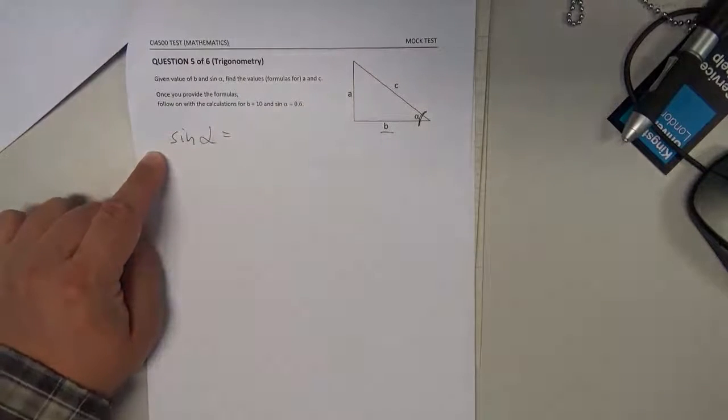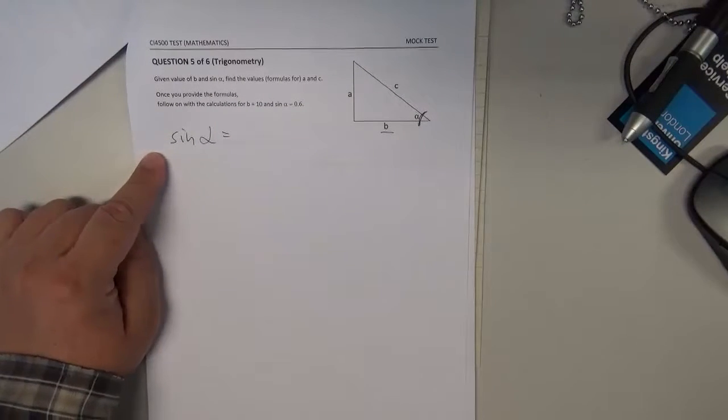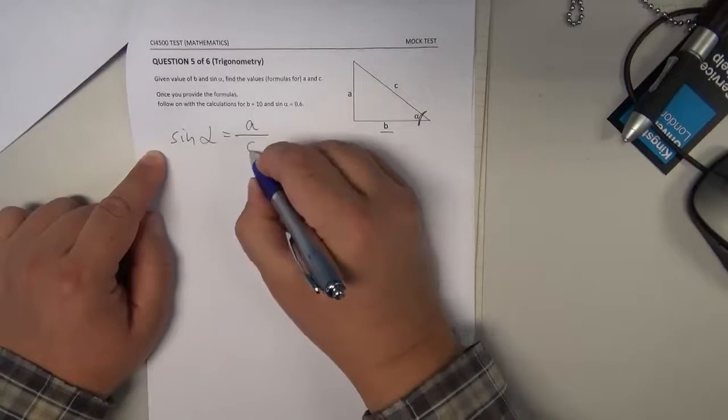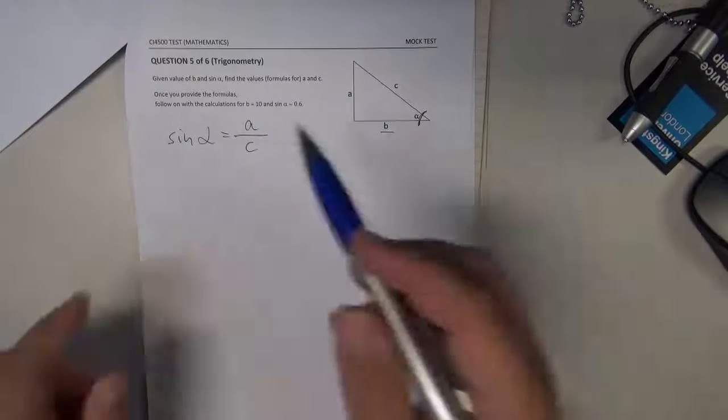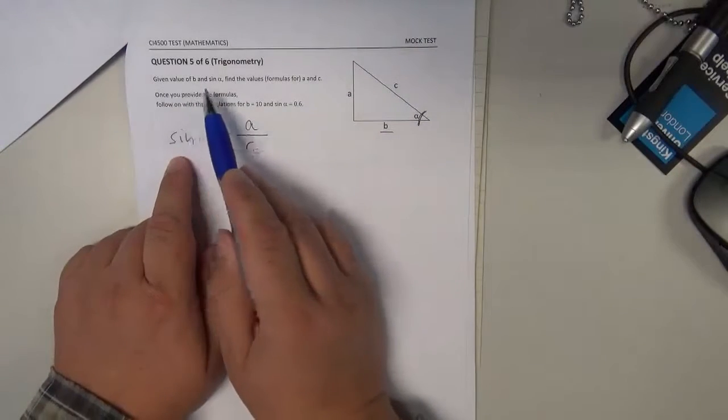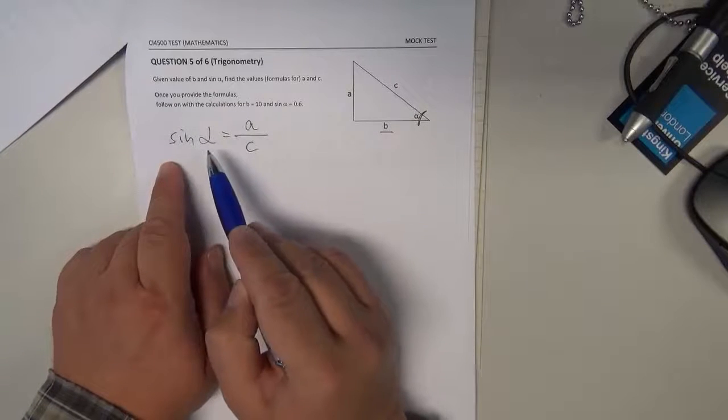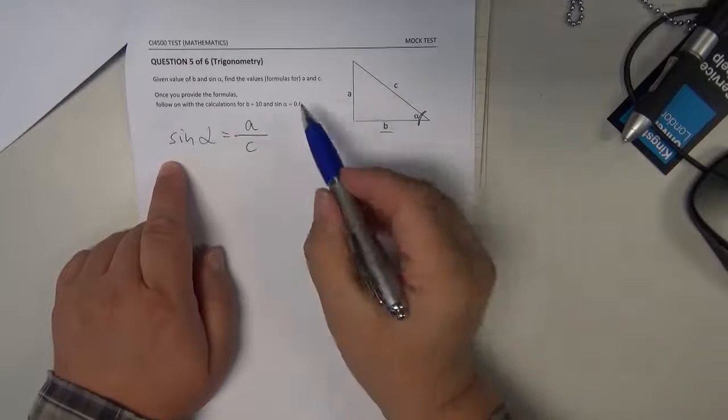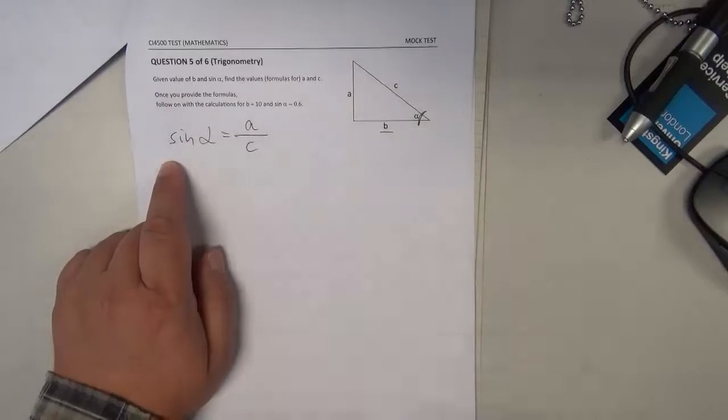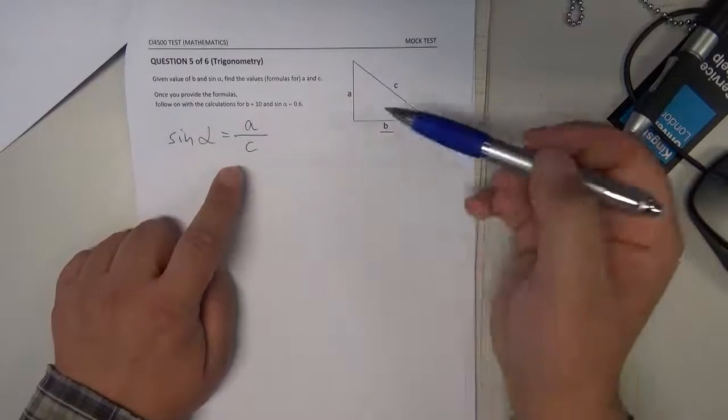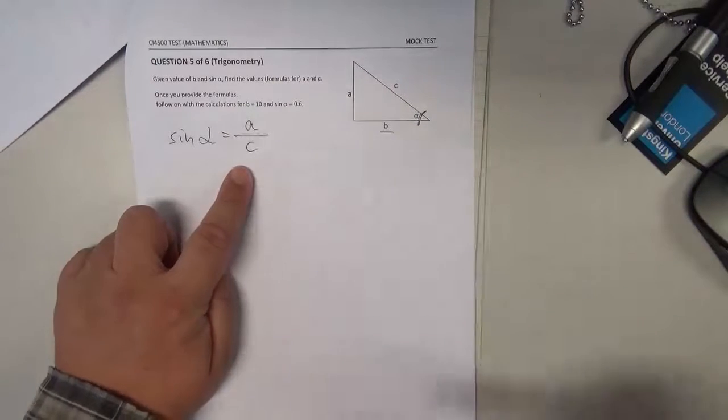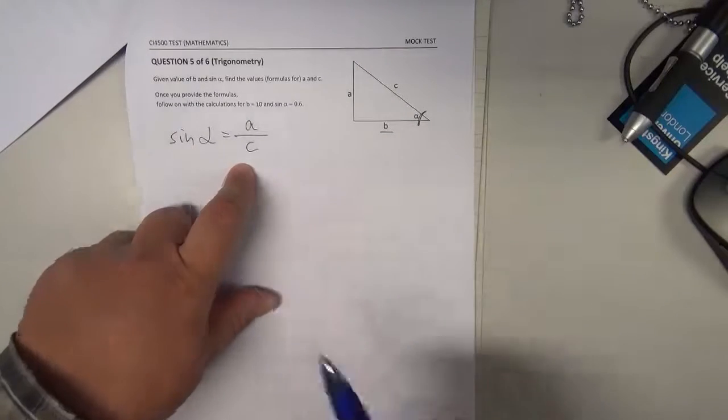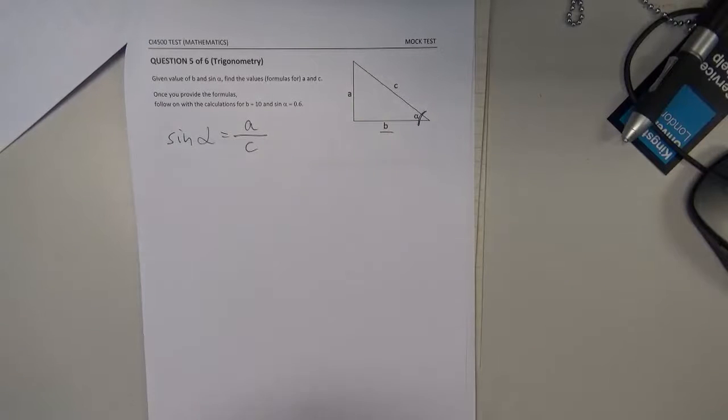Sine alpha is unfortunately not the adjacent, the opposite. A divided by hypotenuse by c, and we have a problem. We are given the value of sine alpha. Well, later on, in the last stage of this exercise, we will use the value of sine alpha 0.6, but not yet now. But we don't know a, and we don't know c. Actually, this question asks us to provide the formulas for both a and c.